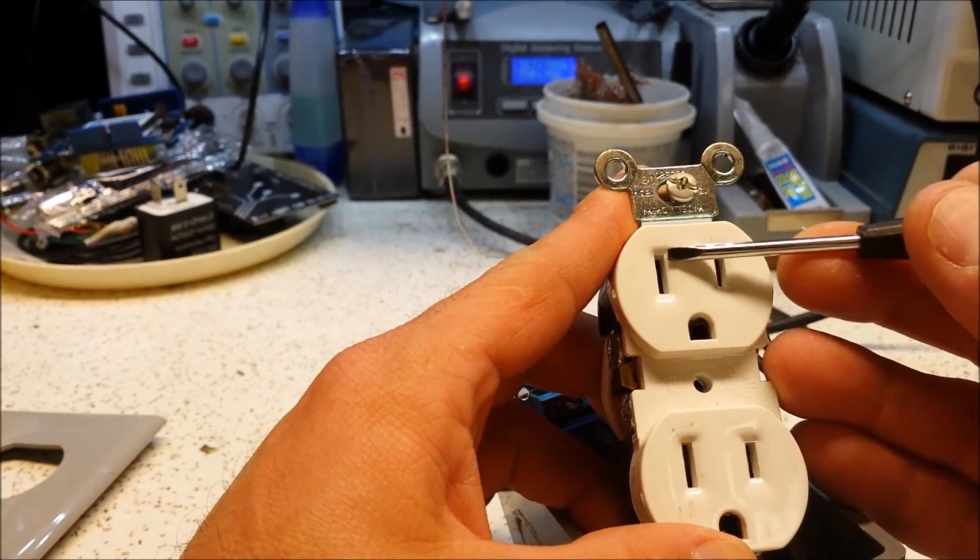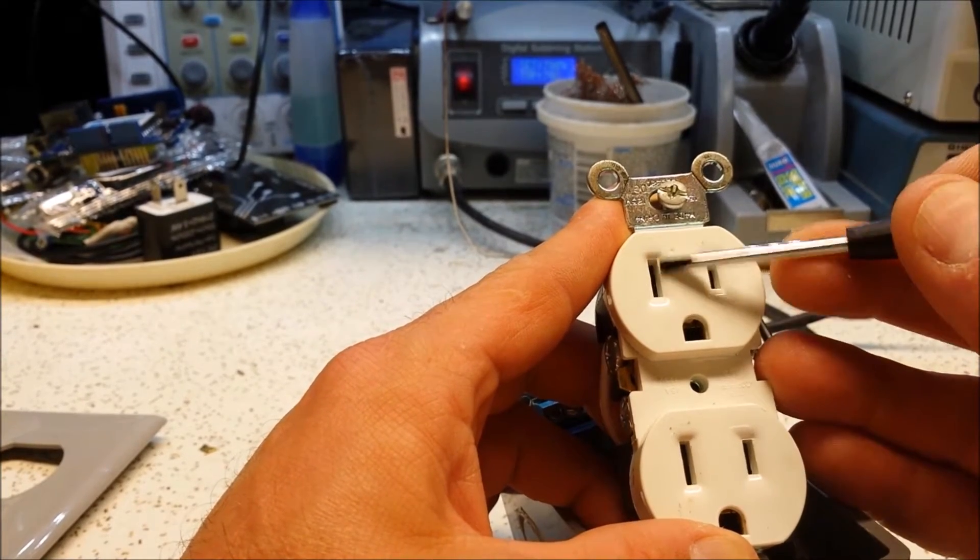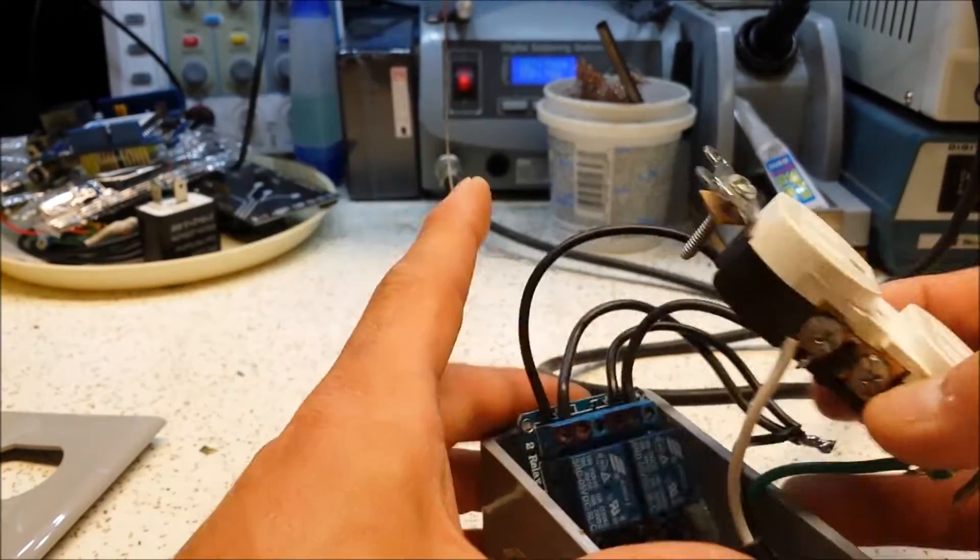On that note, you'll see that this is longer than this side. This is neutral and this is your hot or black. Neutral is white and then green is ground, the big pin in the bottom. So that's it.